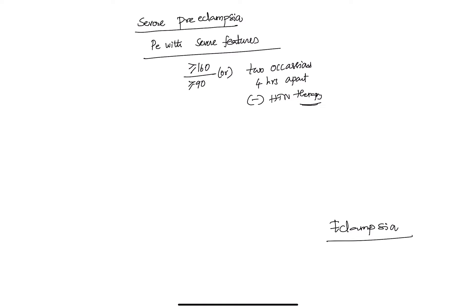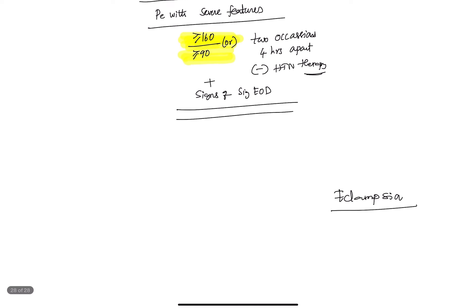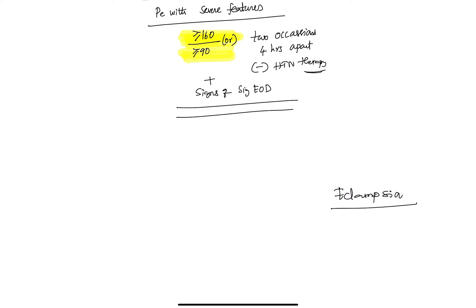Preeclampsia with severe features requires very high BP — ≥160/90 on two occasions four hours apart — plus signs of significant end-organ dysfunction: pulmonary edema, thrombocytopenia, new-onset cerebral or visual disturbances, elevated serum creatinine, or elevated transaminases. The key difference from regular preeclampsia is that the BP is now very high and must be checked twice. Patients on antihypertensive therapy may show BP fluctuations controlled by dose titration, but these patients are not on therapy yet both readings are elevated — raising concern for severe preeclampsia, which can progress to eclampsia.